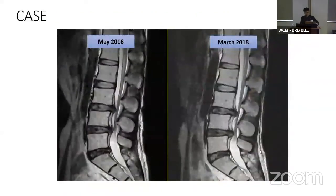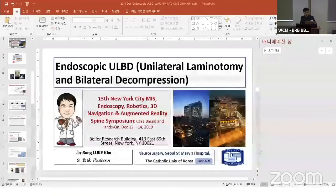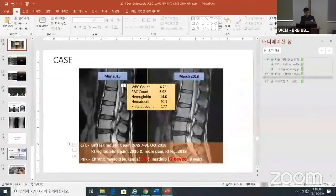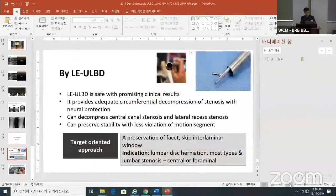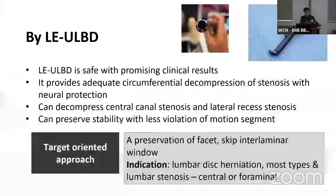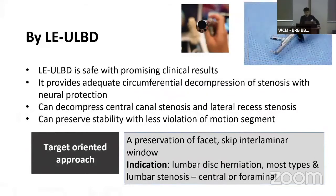Because of time limitation, I'm going to move to the conclusion. By lumbar endoscopic ULBD, we can treat most spinal stenosis and combined disc herniation, even with combined foraminal stenosis. We can also preserve the patient's stability with the least violation of the motion segment. Thank you very much.